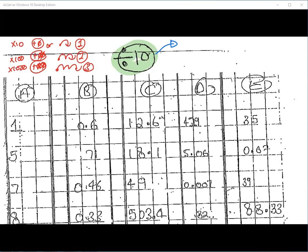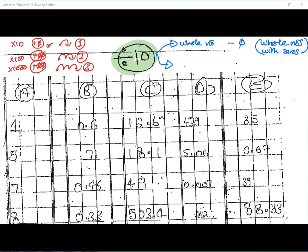Before we were adding a zero, so now we take one zero away. And that's only for whole numbers that have zeros at the end — so you don't just take off a zero if it wasn't at the end of the number. Like a 20, 30, 40, or 320 has a zero at the end, so you remove one zero for whole numbers. What else? What happens if you have a decimal number?